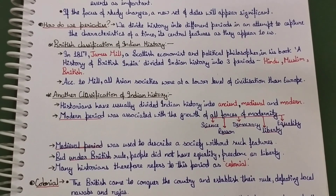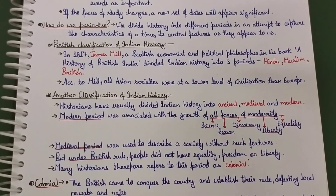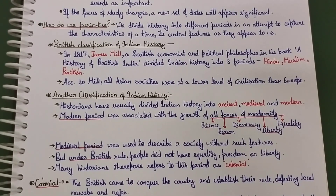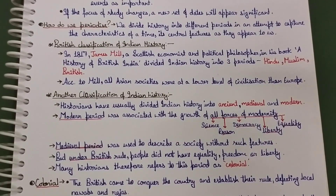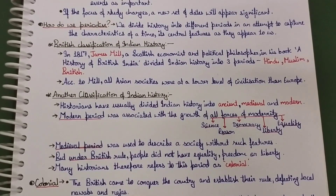The medieval period, by contrast, was used to describe a society without such features — a society lacking science, reason, democracy, liberty, and equality. These are all the defining features of the modern period.